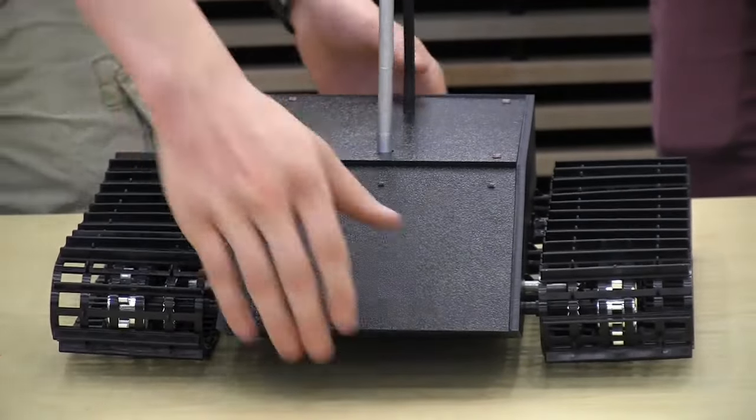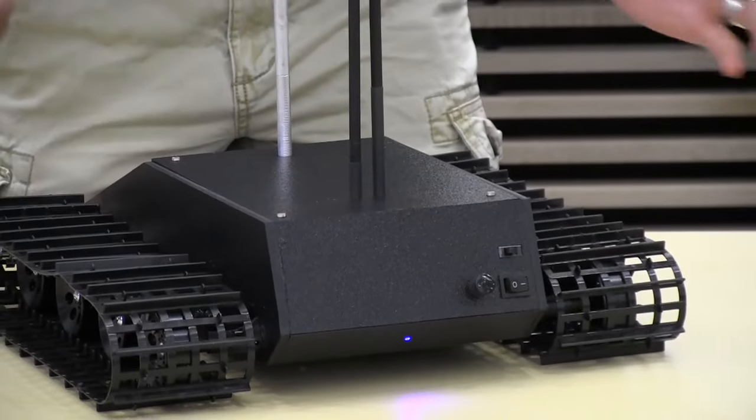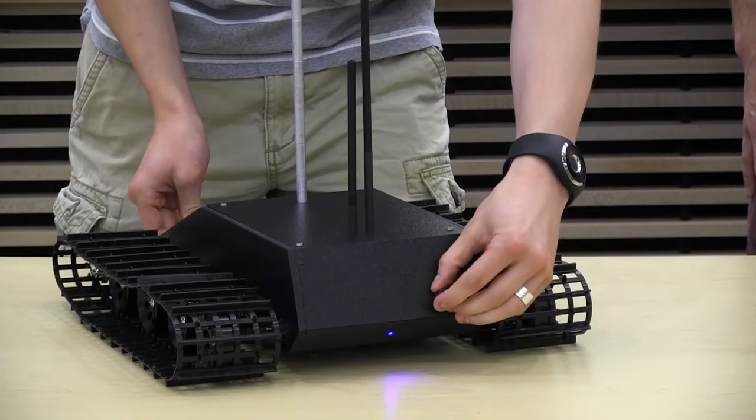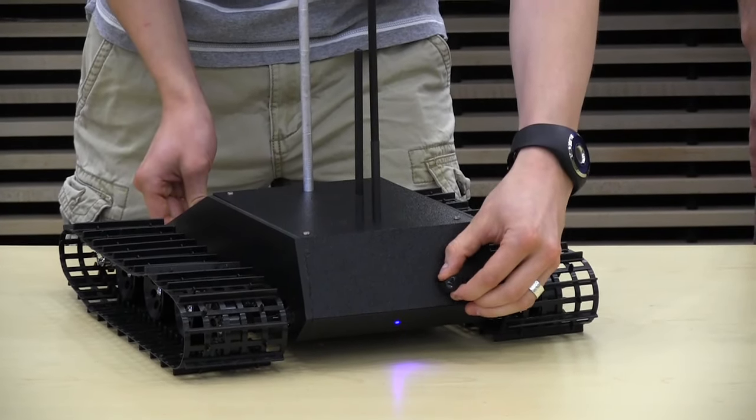Right now we have a potentiometer in the back that adjusts the threshold voltage that we'll consider tripped for these sensors. So if we adjust the analog reading here, the siren will go off. There you go.